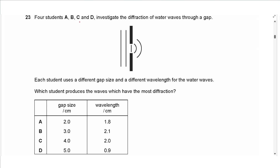Question 23: Four students investigate diffraction of water waves through gaps of different sizes with different wavelengths. Most diffraction occurs when wavelength is approximately equal to the gap size. Comparing ratios: Student A has wavelength 2 and gap 1.8 — very close. Student B has 3 and 2, Student C has 0.1 and 4, Student D has 5 and 0.9 — all further apart. Answer is A.